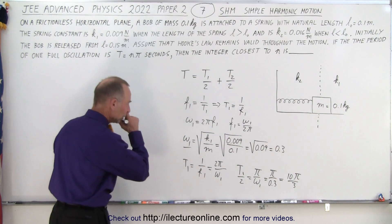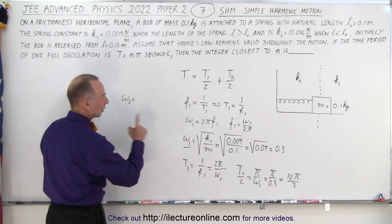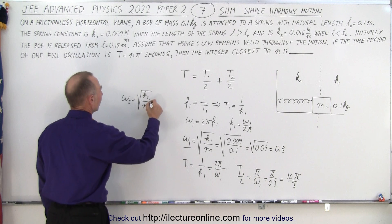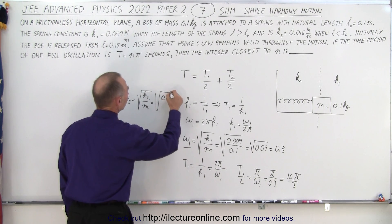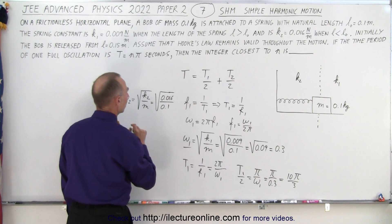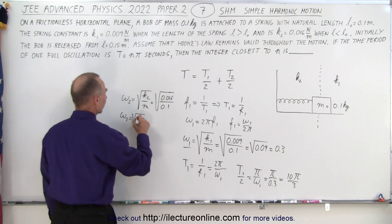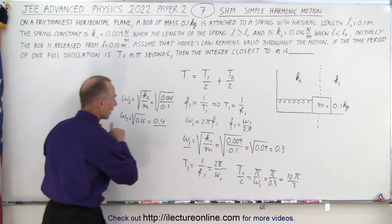So that's t1. We do the same for t2. So we have omega 2 is equal to the square root of k2 over the mass which is equal to the square root of 0.016 divided by 0.1. And so that would be omega 2 is equal to the square root of 0.16 which is equal to 0.4. All right so that's our omega 2.